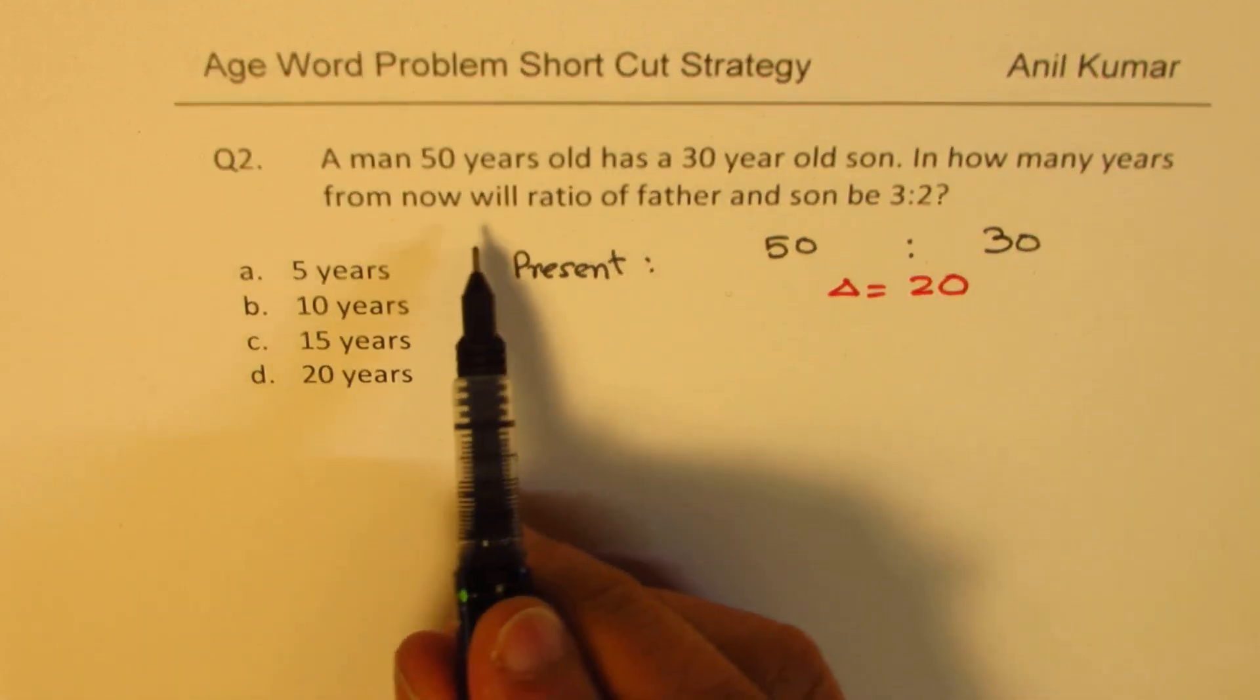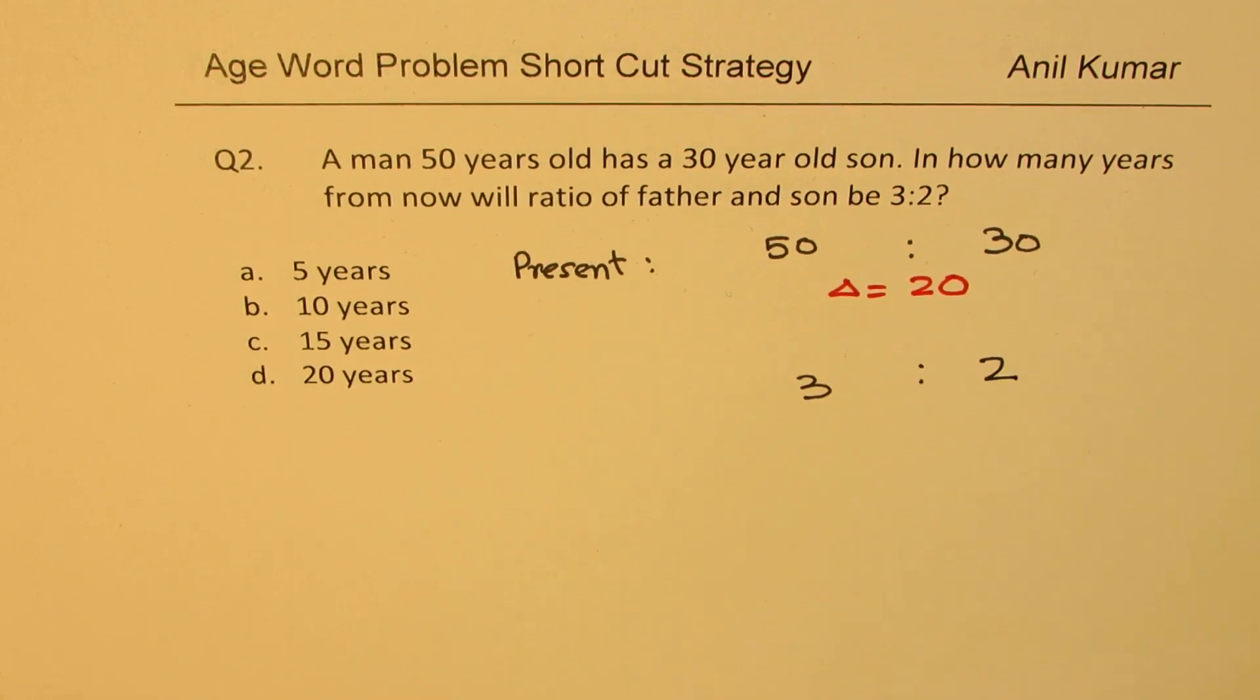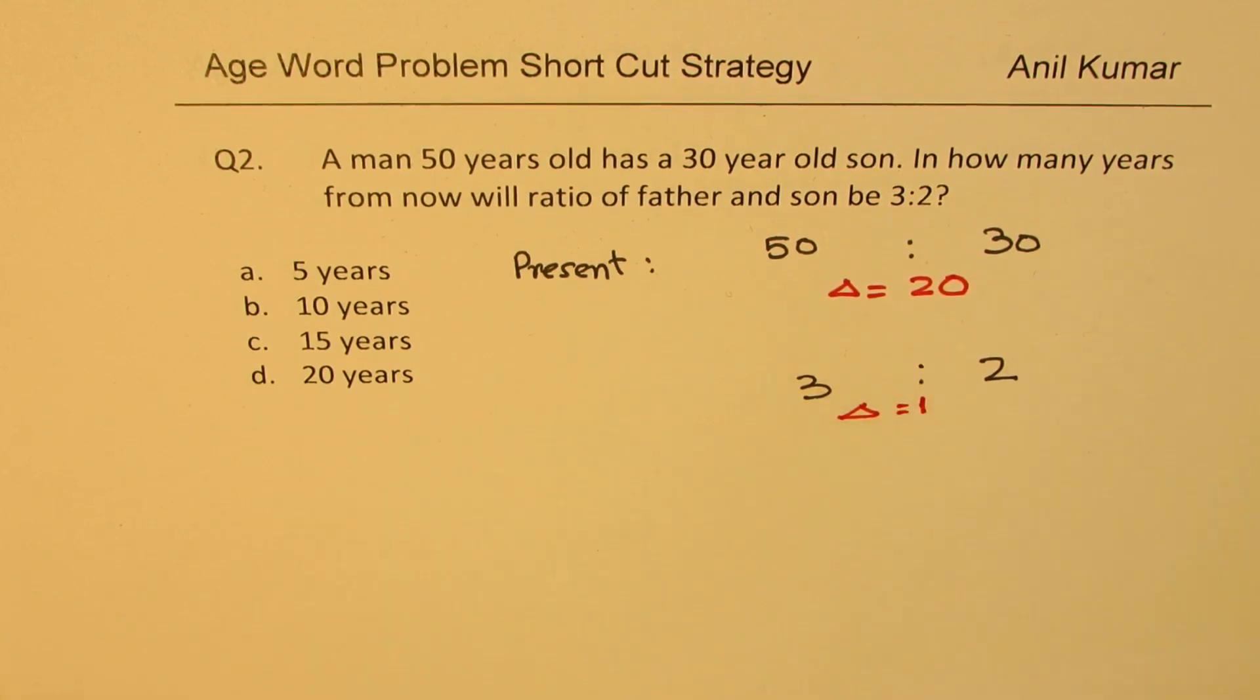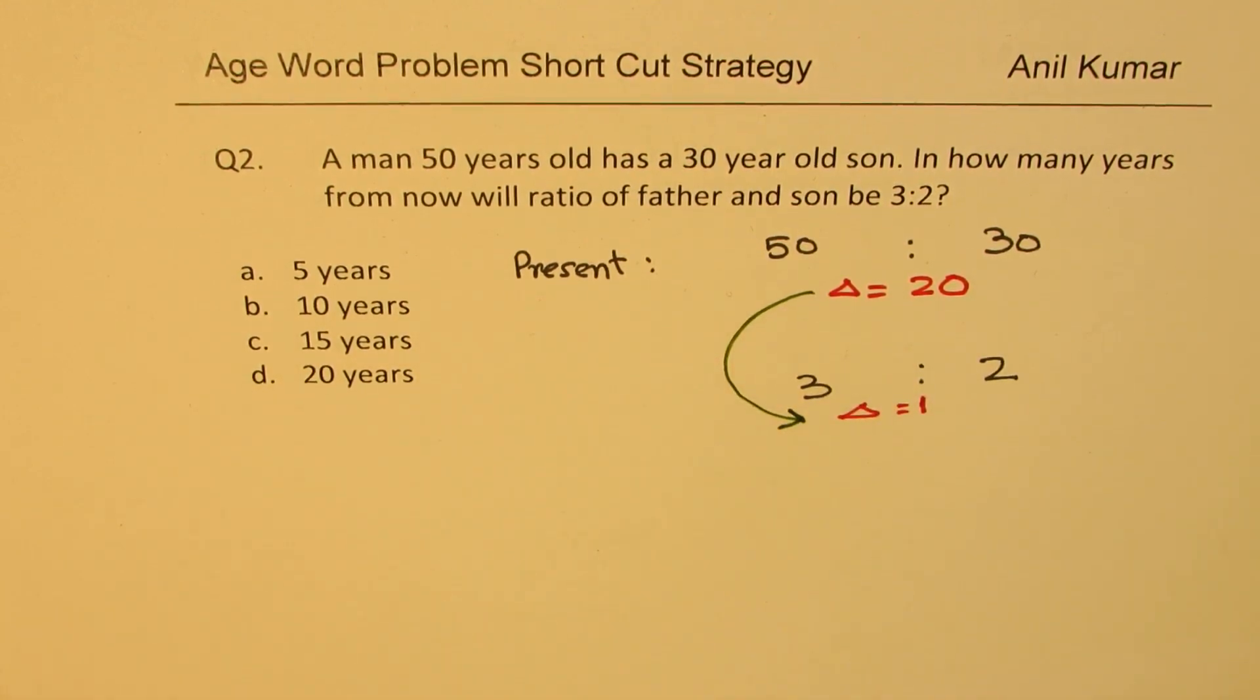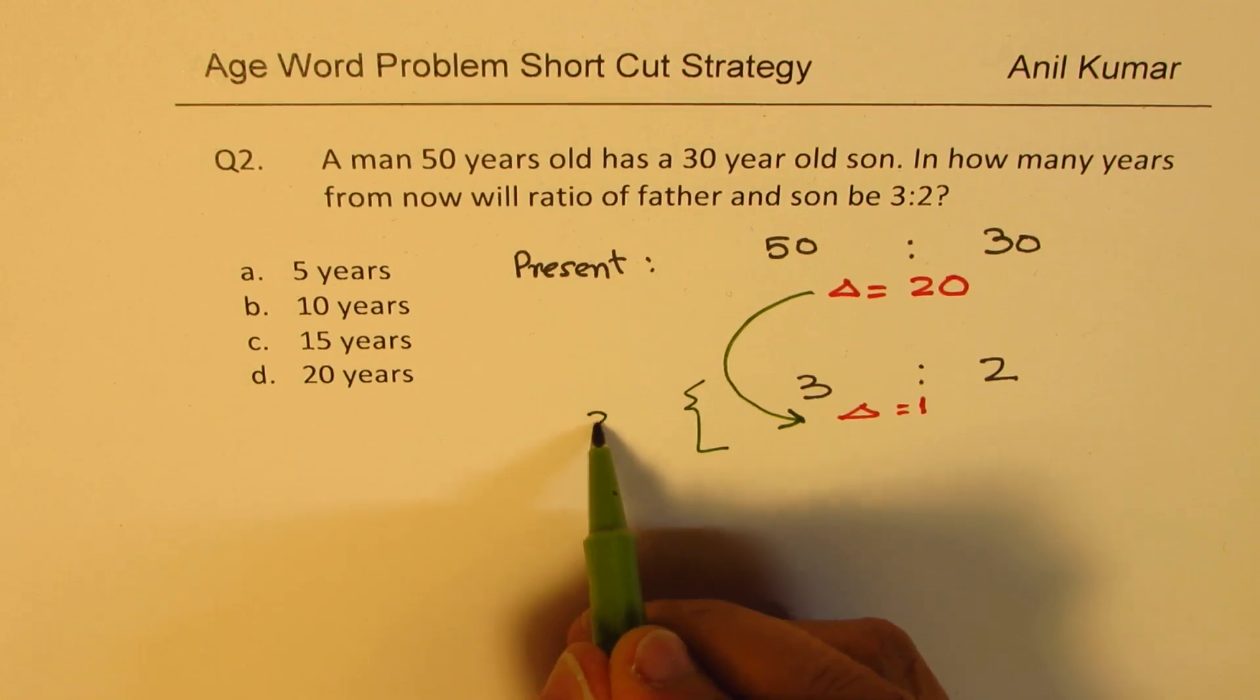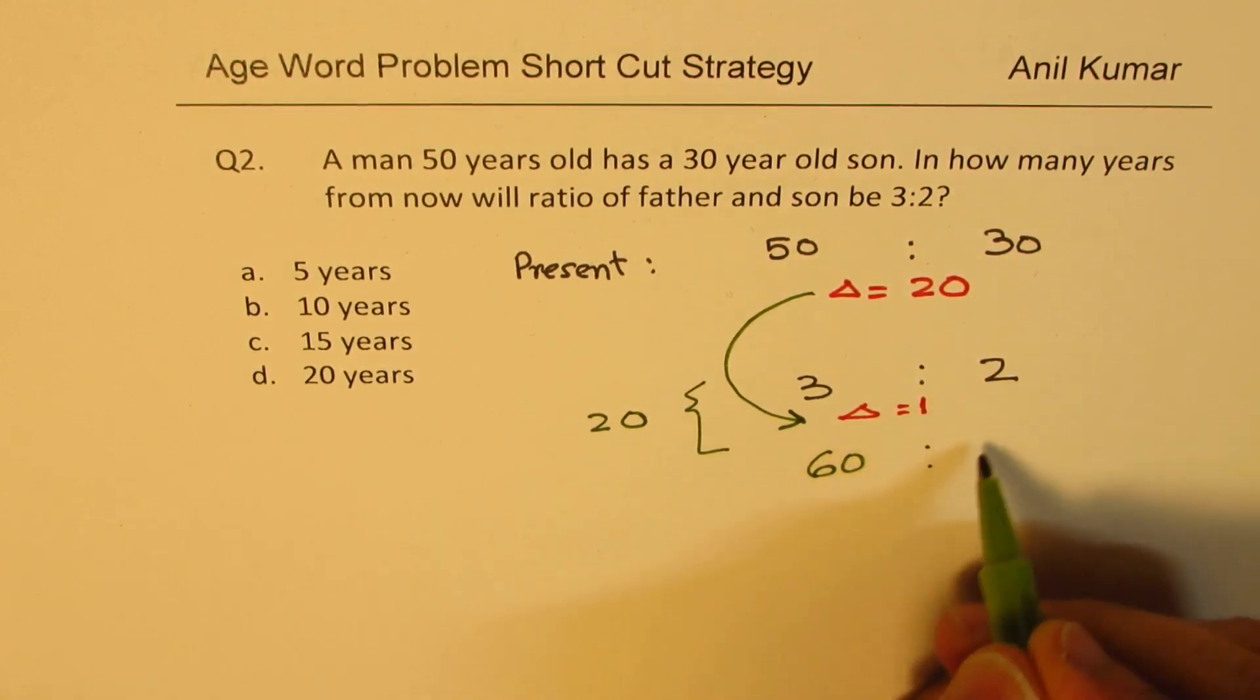In how many years from now will the ratio of father to son be 3 is to 2? So we want this to be 3 is to 2. Now here, what is the difference? The difference is just 1. That cannot be the case, because I have to have the same difference. Maybe 10 years, 20 years, whatever. Difference will be 20 years. So to make it 20, I have to multiply both of them by 20. If I do that, 20 times 3 is 60, and 20 times 2 is 40.